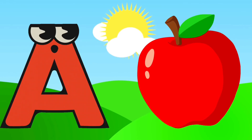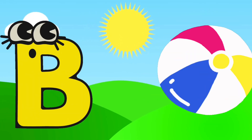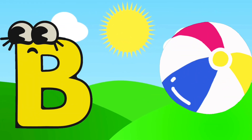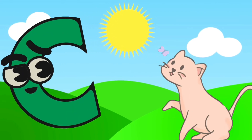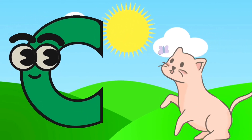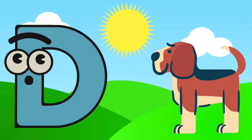A is for apple, a-a-apple. B is for ball, b-b-ball. C is for cat, c-c-cat. D is for dog, d-d-dog.